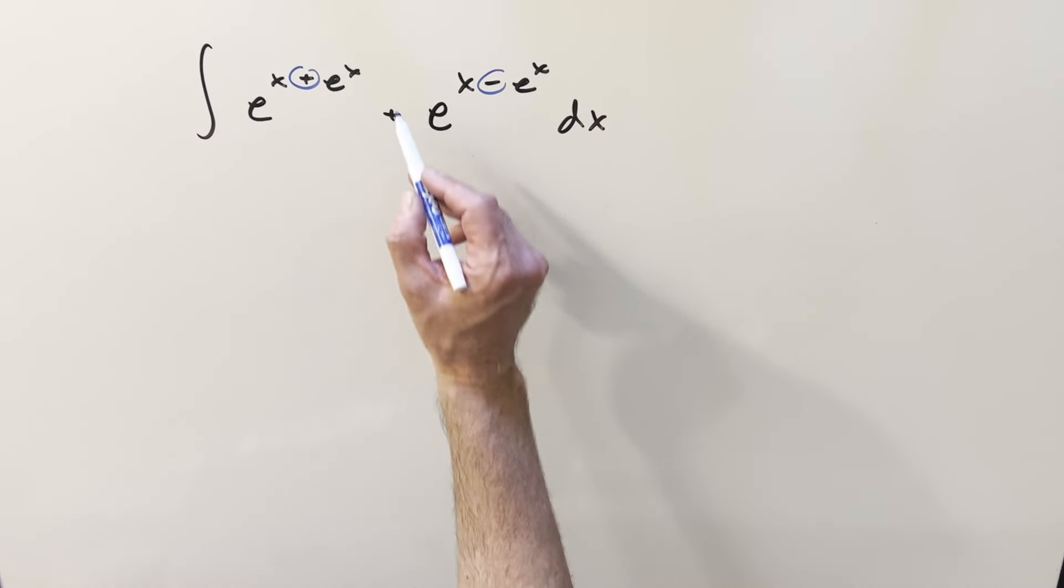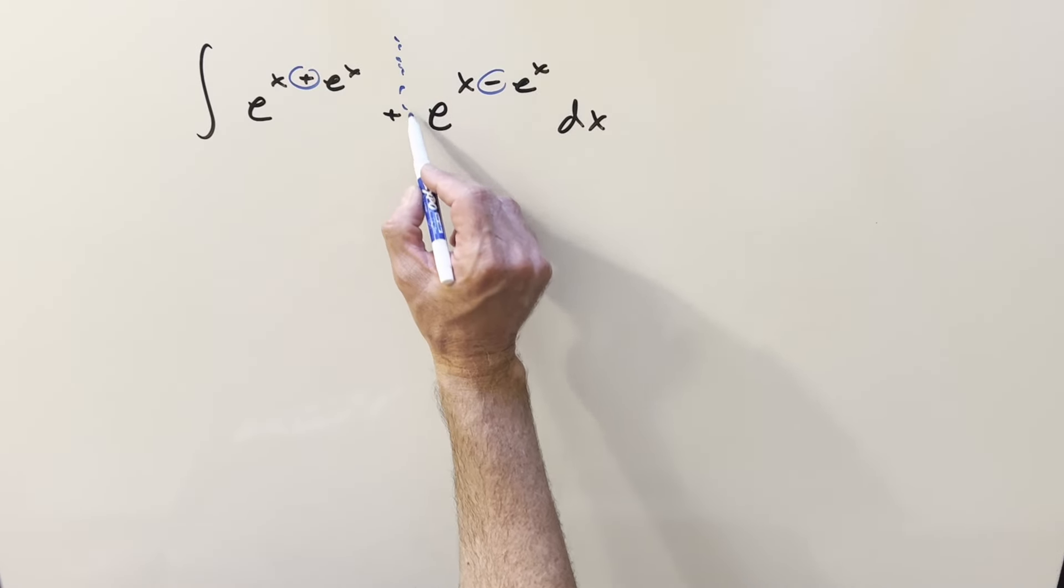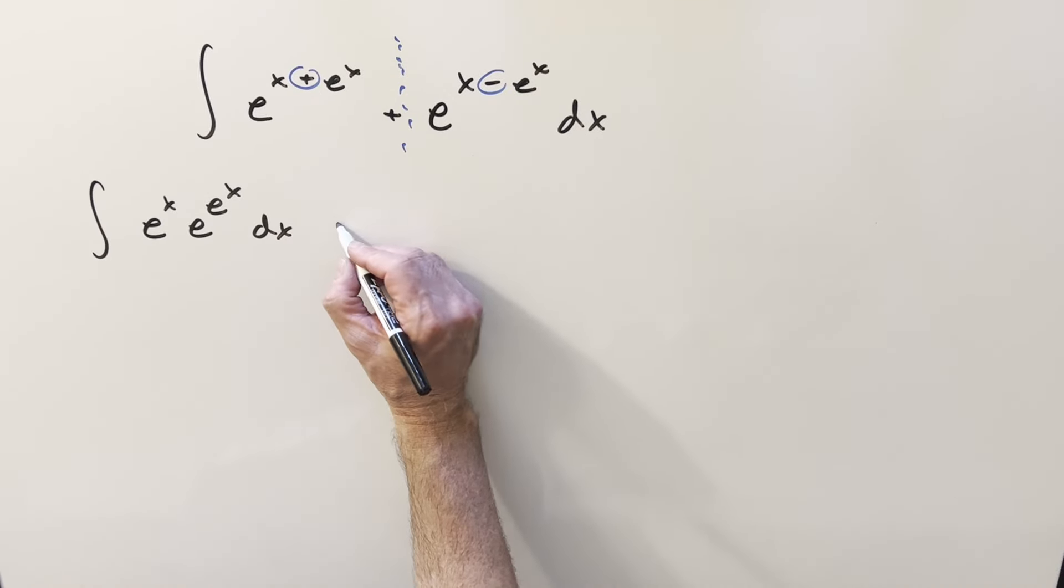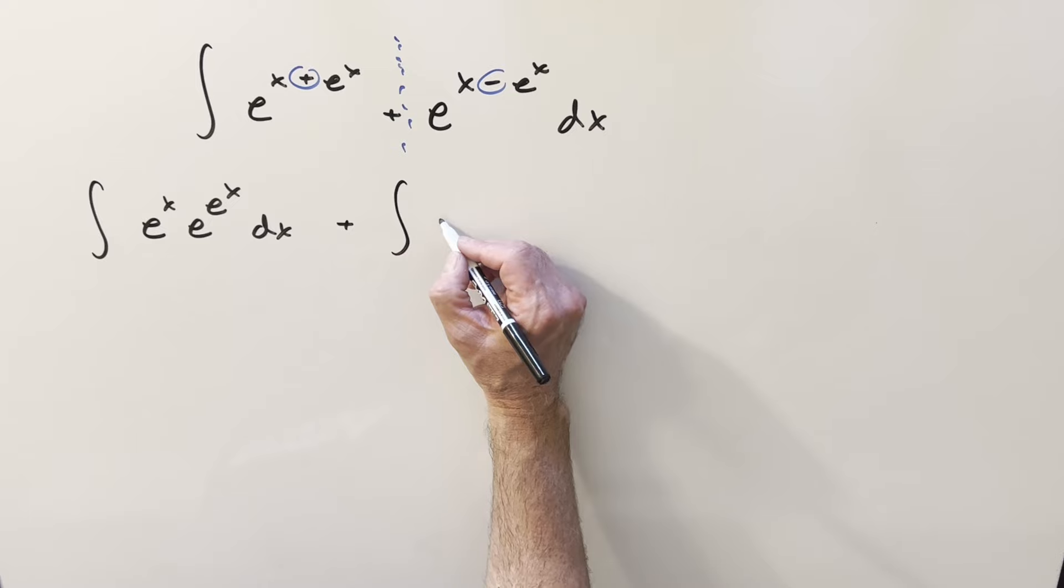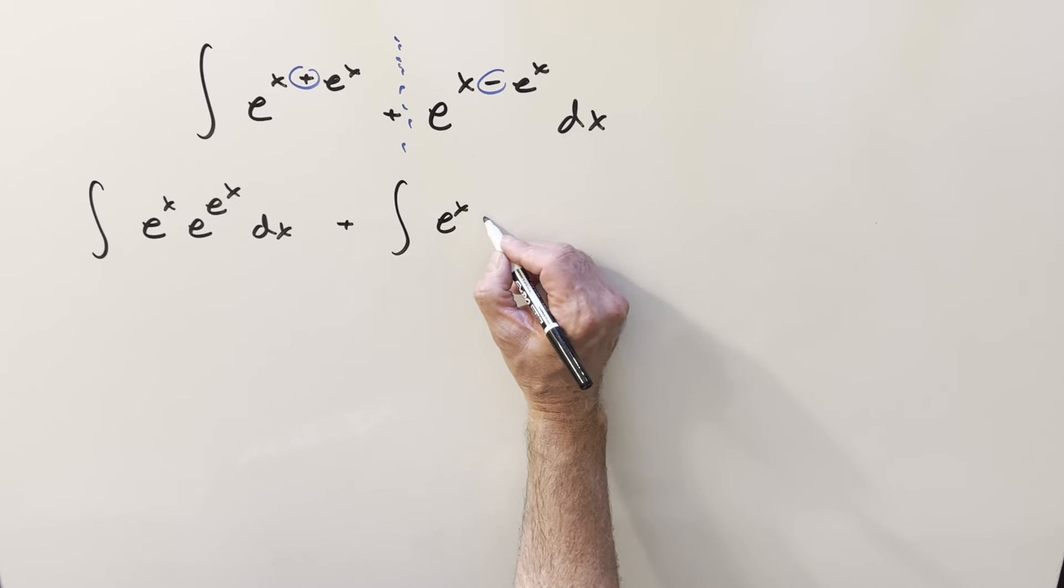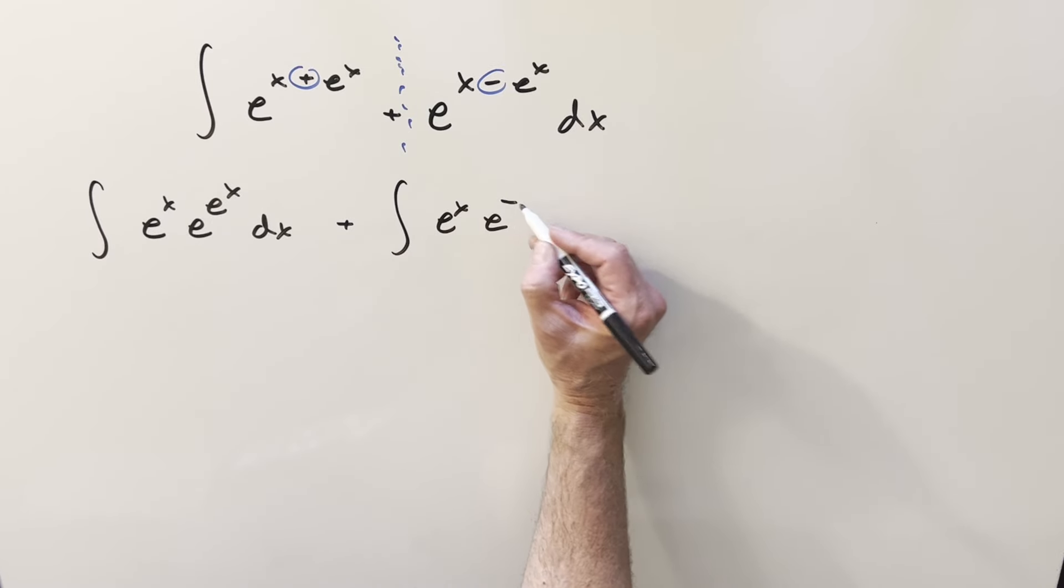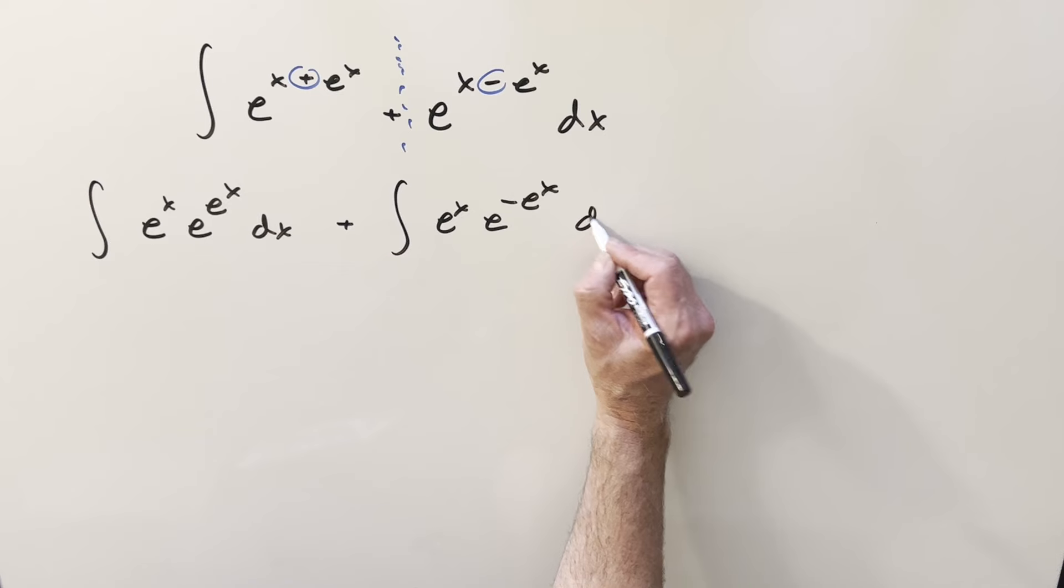And the other thing, something we don't usually like to do, is I actually want to split this into two integrals, and we'll do basically the same kind of thing on the second one. Here, we'll turn this into e to the x times, but then this one's just going to be a little bit different. This will be e to the minus e to the x dx.